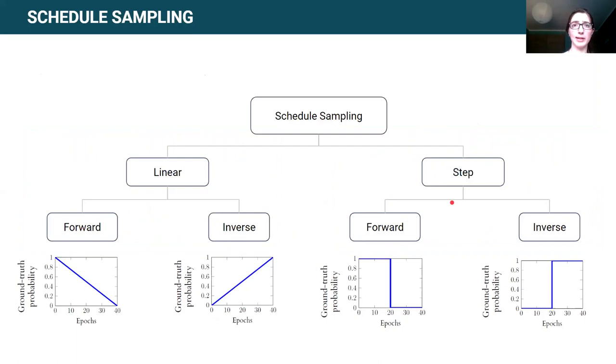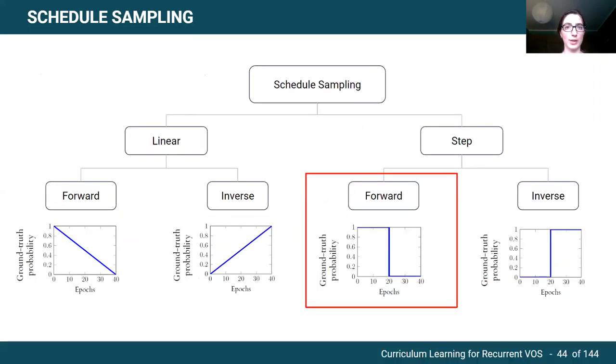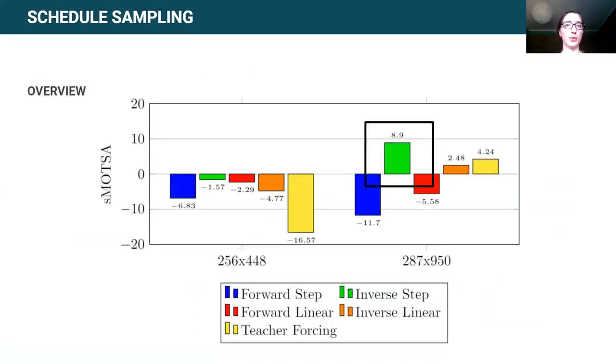Two cases have been studied, the linear and the step, and for both of them the straight definition, named forward, has been explored, as well as the inverse strategy. We have used a forward step schedule sampling as baseline for all the curriculums and implementations, as RGOS, the model, was originally trained in this way. The results show that the best performance is obtained with the inverse step for higher image resolutions.